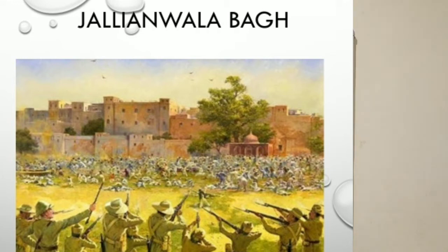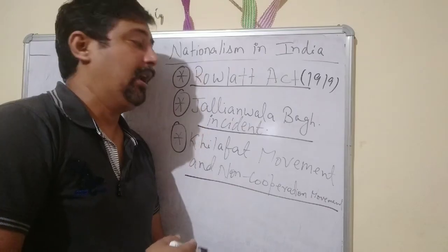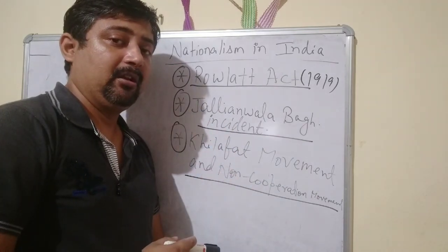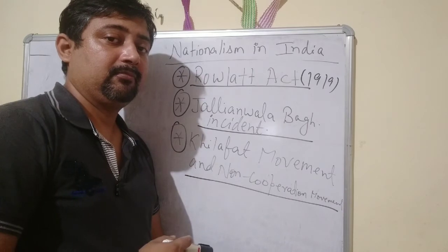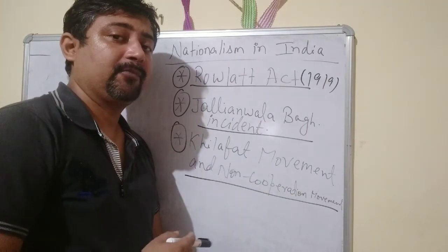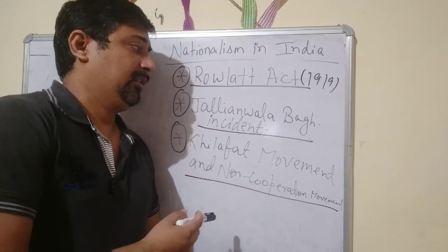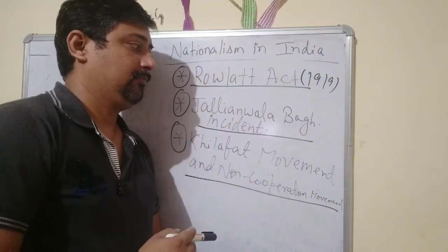Suddenly General Dyer came with armed forces and blocked the single exit and entry door. Without any warning, he opened fire. People could not understand why bullets were coming towards them and they started dying one by one. Many jumped into a well to save themselves, but no one was saved. Dead bodies of innocent people lay all over Jallianwala Bagh on 13th April. It was a very heinous crime committed by the Britishers.